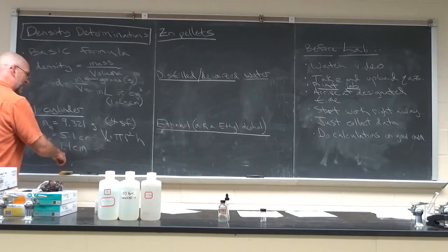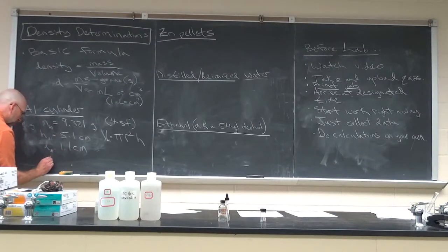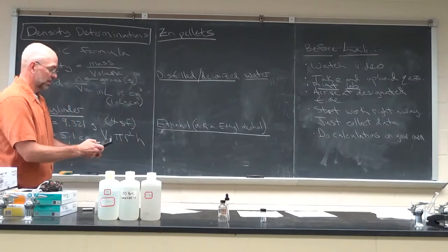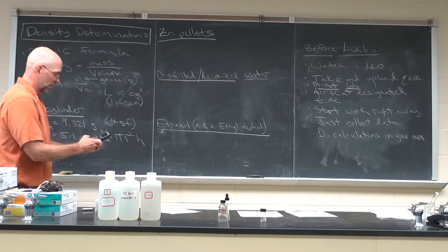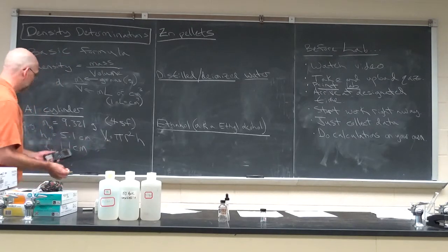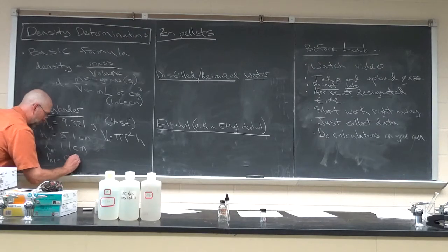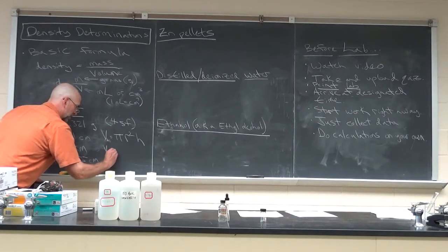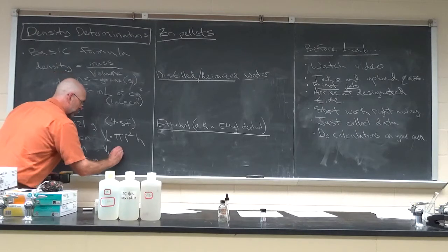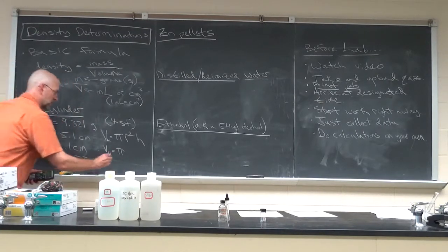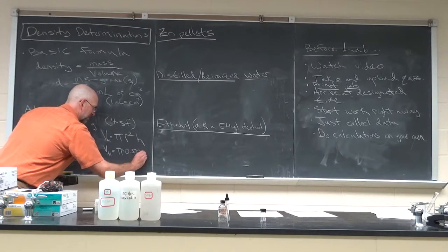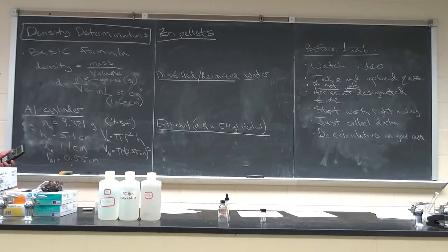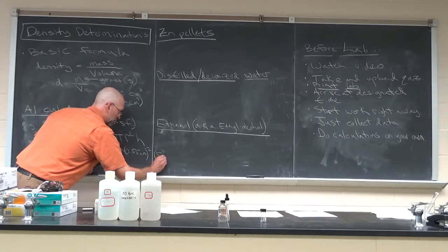The height we have, but we don't have the radius. The radius is half the diameter, so 1.2 divided by 2 is 0.55 — wait, I used 1.1 divided by 2 — it is 0.55 centimeters. So the volume of this aluminum cylinder is going to be pi times the radius, 0.55 centimeters squared, times the height, 5.1 centimeters.